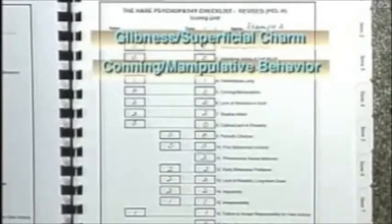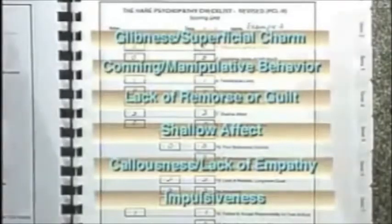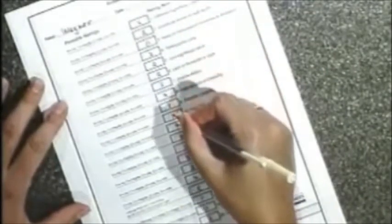In the early 1980s, Hare and his colleagues developed a psychometric test, now known as the Psychopathy Checklist Revised. Consisting of a 20-item rating scale, the checklist measures such things as glibness, superficial charm, conning manipulative behavior, lack of remorse or guilt, shallow affect, callousness, lack of empathy, and impulsiveness. Each item is scored on explicit criteria. Possible scores range from 0 to 40. For the average person, a typical score would be 5. Anyone with a score of 30 or above would be considered a psychopath.